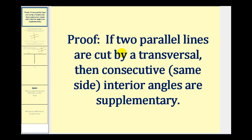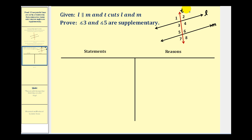Welcome to a proof of: if two parallel lines are cut by a transversal, then consecutive interior angles are supplementary. So if we're given that L and M are parallel and are cut by a transversal T, as we see here, we want to prove that angle three and angle five are supplementary.